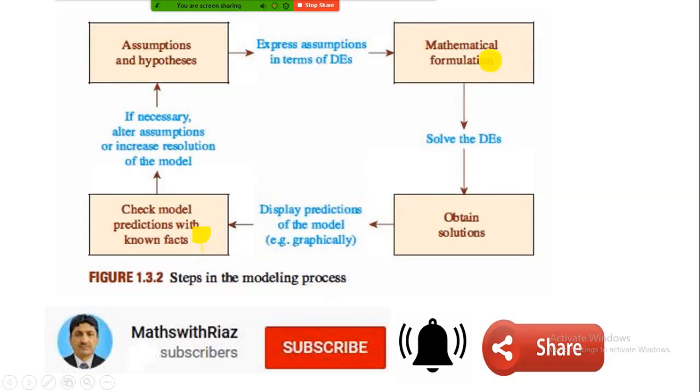Here are the four steps in the mathematical modeling process: Assumption, mathematical formulation, solution, and then the interpretation of the solution to check model predictions with the known facts. So we will follow these steps.